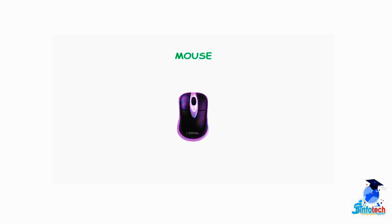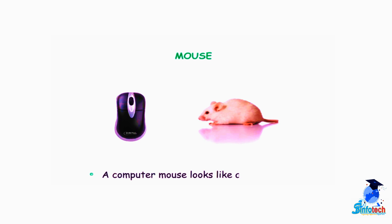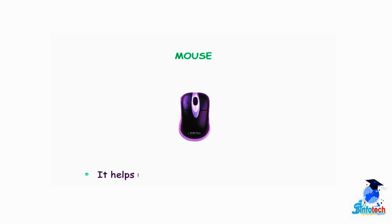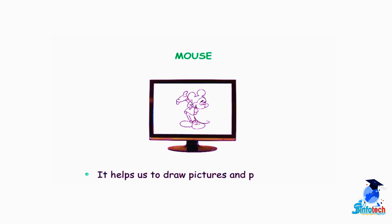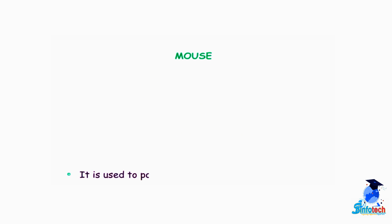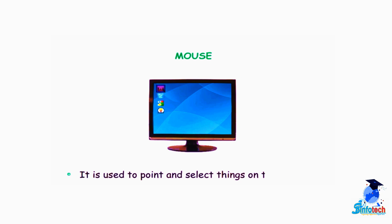A computer mouse looks like a real mouse. It has two buttons on it. It helps us to draw pictures and play games. It is used to point and select things on the monitor.